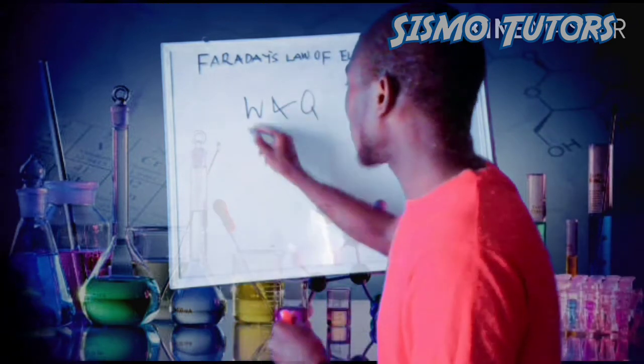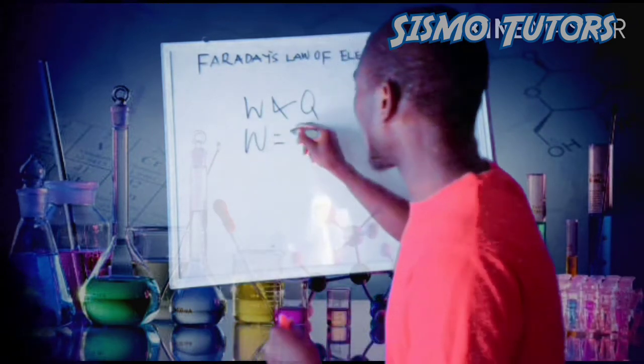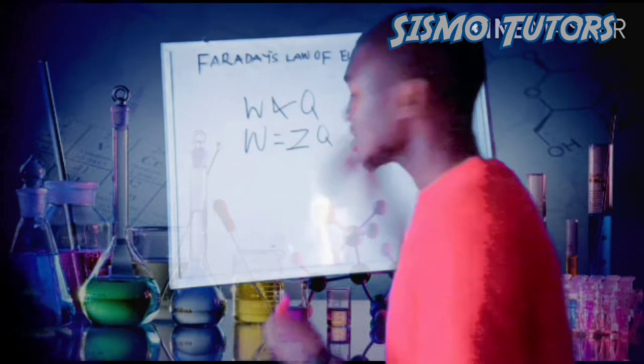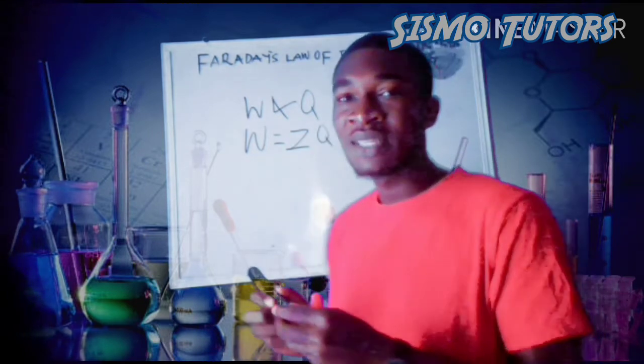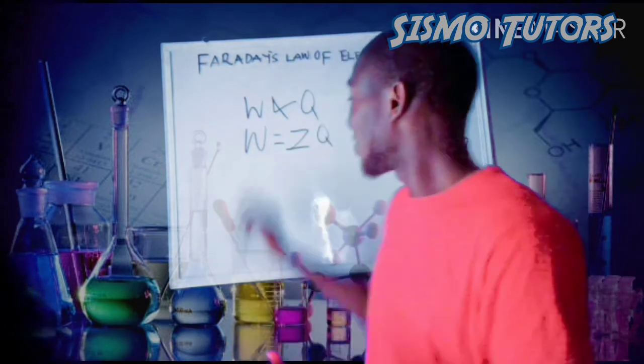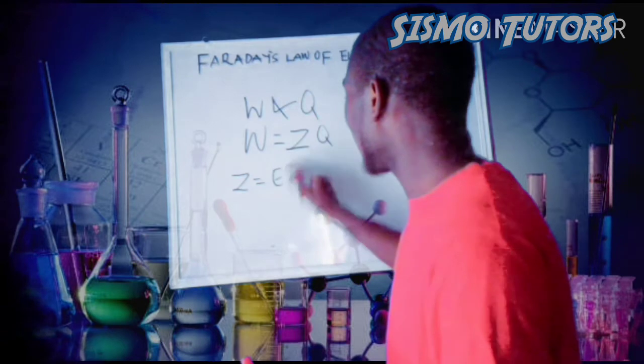Now we can introduce the proportionality constant which we know as Z, so we have W = ZQ. Z is the electrochemical equivalent.